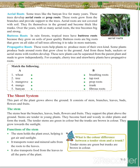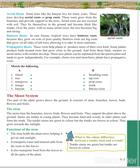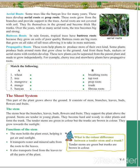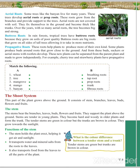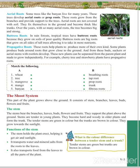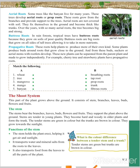The next type is propagative roots. These roots help plants produce more of their own kind. Some plants produce buds around the roots that grow close to the ground, and from those buds, new stems with roots develop. These new plants can be separated from the parent plant and made to grow independently. Cherry trees and strawberry plants are examples of plants with propagative roots.